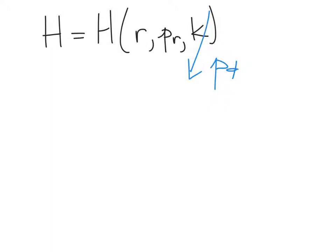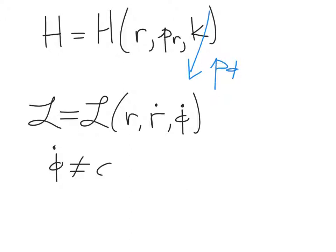This has a significant advantage over the Lagrangian formulation for this problem, where the Lagrangian depends on r, r dot, and phi dot, but phi dot is not a constant. So even though the momentum associated with phi is a constant, phi dot itself is not a constant. And so even though phi is ignorable in both the Lagrangian and the Hamiltonian, in the Lagrangian, the associated generalized velocity is not a constant. And so this is a tremendous advantage of the Hamiltonian over the Lagrangian.